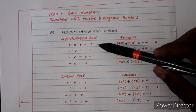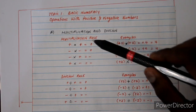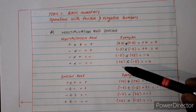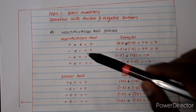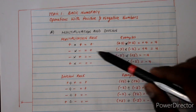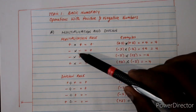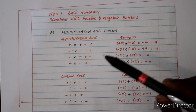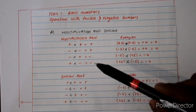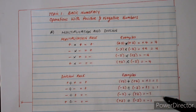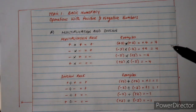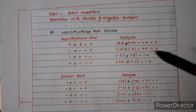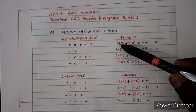For multiplication, the rules are: positive times positive gives a positive; negative times negative gives a positive again — remember, negative times negative is positive, not negative; negative times positive is negative; and positive times negative is also negative.